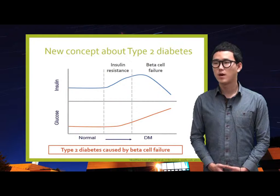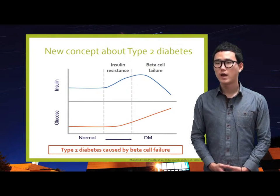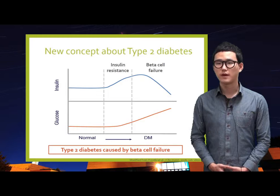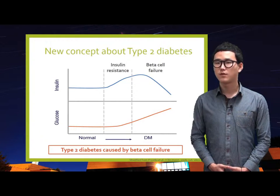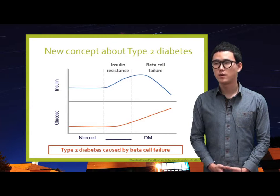After several studies about the relation between diabetes and beta cells, people found that Type 2 diabetes is caused by beta cell failure. As people grow up, insulin resistance increases due to factors such as lifestyle, genetic factors, diet, and obesity. Increased insulin resistance does not directly cause diabetes because of compensation by increased insulin secretion. But after a threshold is exceeded, beta cells cannot withstand the overload and insulin secretion decreases dramatically — a phenomenon called beta cell failure — showing that Type 2 diabetes is a disease of insulin deficiency.